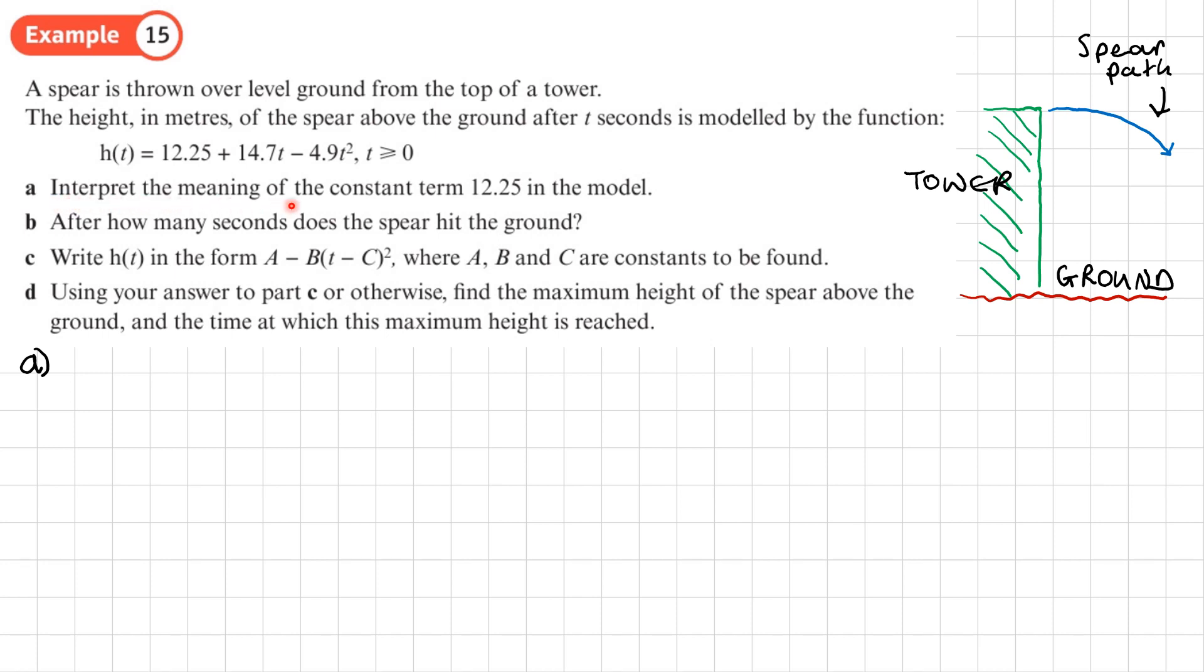So first of all in Part A we need to interpret the meaning of the constant term 12.25 in the model. So that's this number here, 12.25. When am I just going to get 12.25? Well that's going to be when t is zero. When t is zero all of these two terms here are going to disappear, so we're just left with h(t) = 12.25. So when t is zero, that means that h(t) is 12.25. Now the question does say interpret. Interpret is not just writing down a set of numbers, it's looking at the context of the question. So what do we know about when t is zero? Well that is when the spear is thrown.